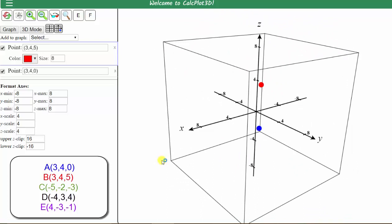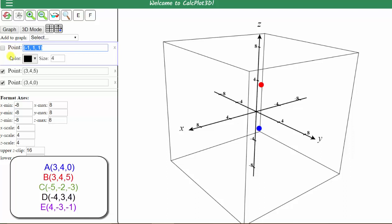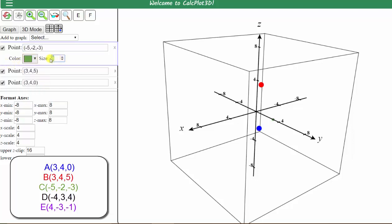Let's plot the next point in green, which is the order triple (-5, -2, -3). Click the arrow, select point, enter the order triple, change the color to green, change the size to eight, click graph. Let's rotate the view.